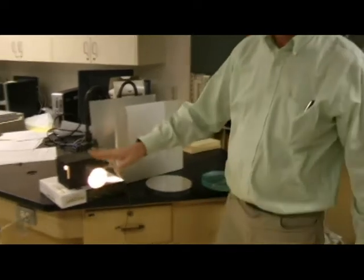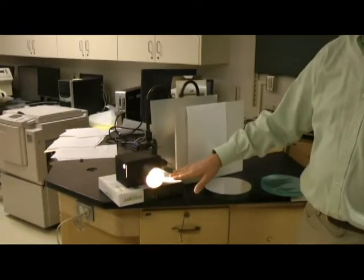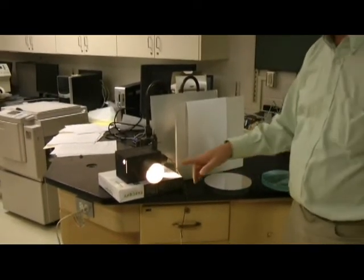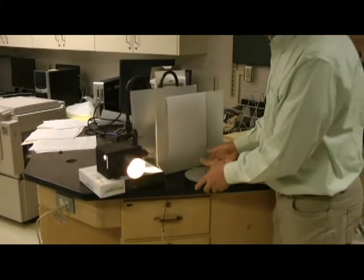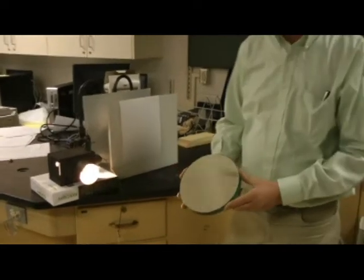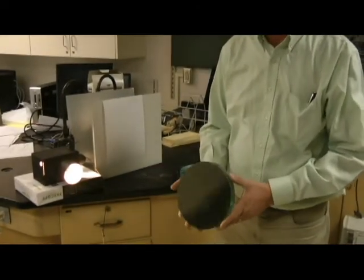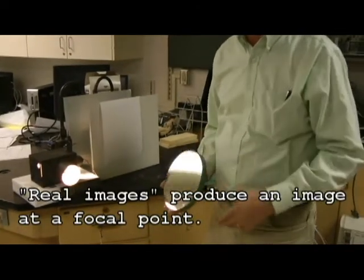What we've got is a light source that has a standard bulb inside of it. And there's a reason I use a standard bulb. I'll show you in just a second. And I've got a surface that I can reflect an image on. Now when you take a concave mirror like this, it will produce what we call a real image. And real images can be reflected onto other surfaces.